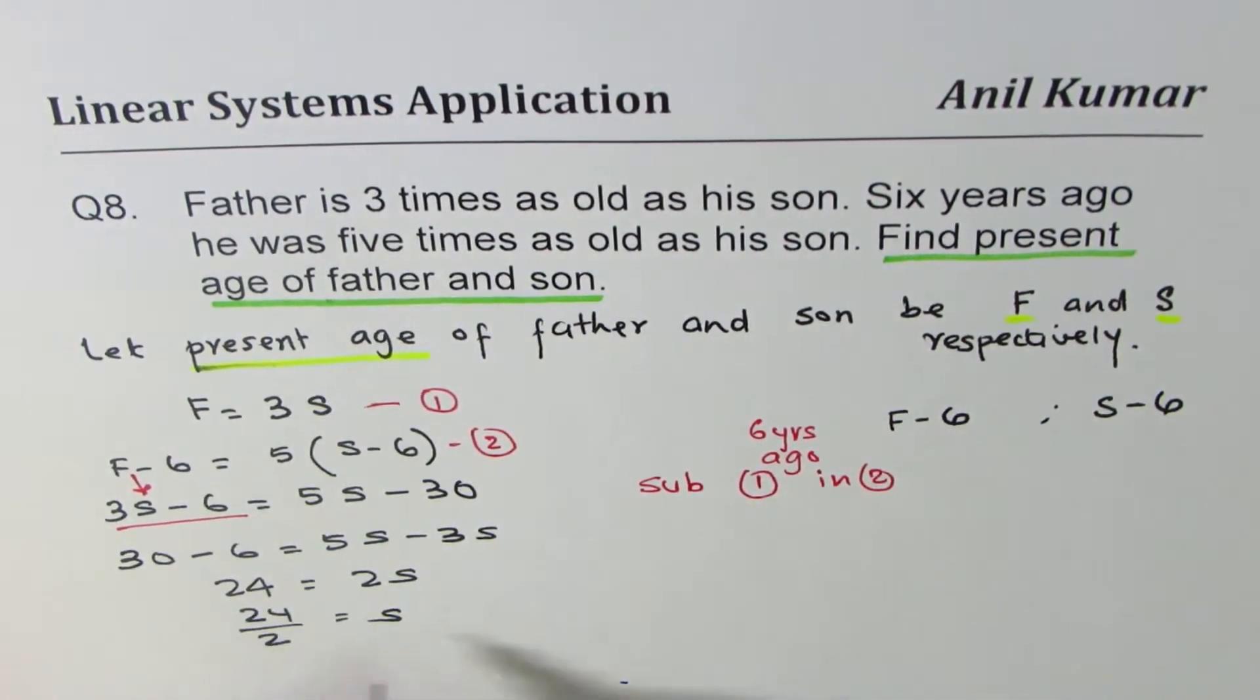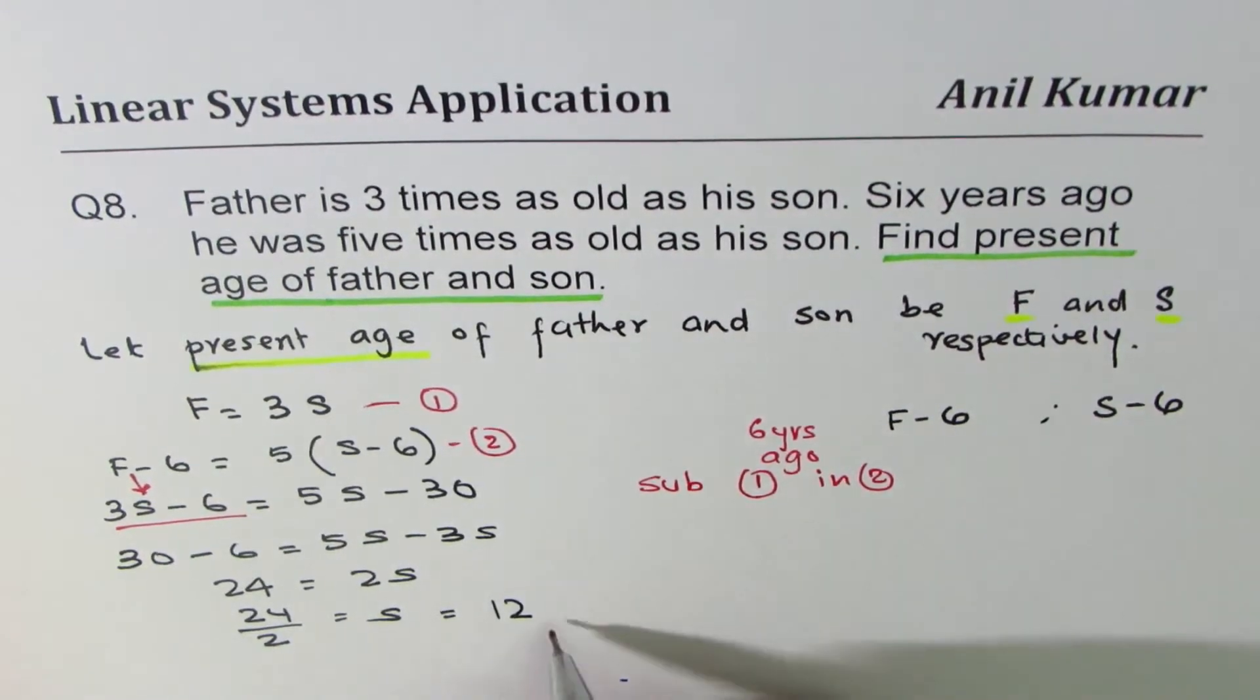S is 24 divided by two. And that gives you S as 12. So we can call this as our equation number three.